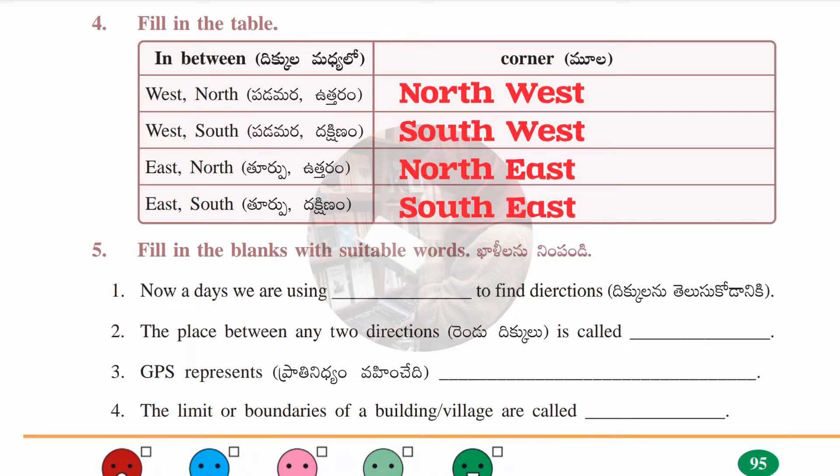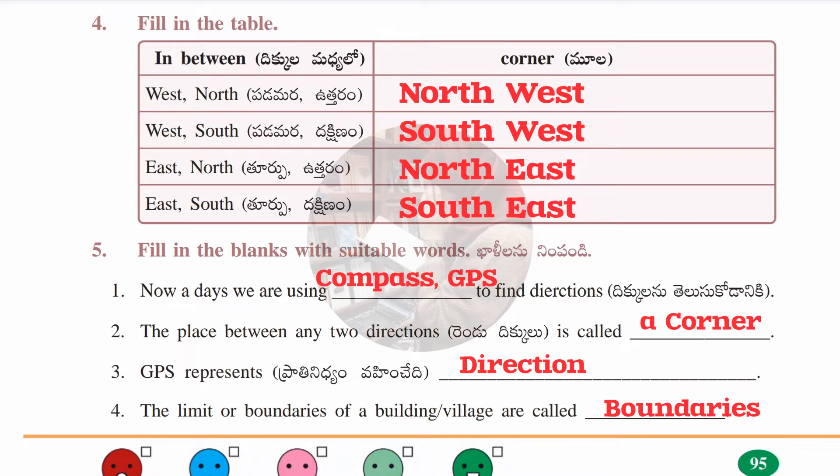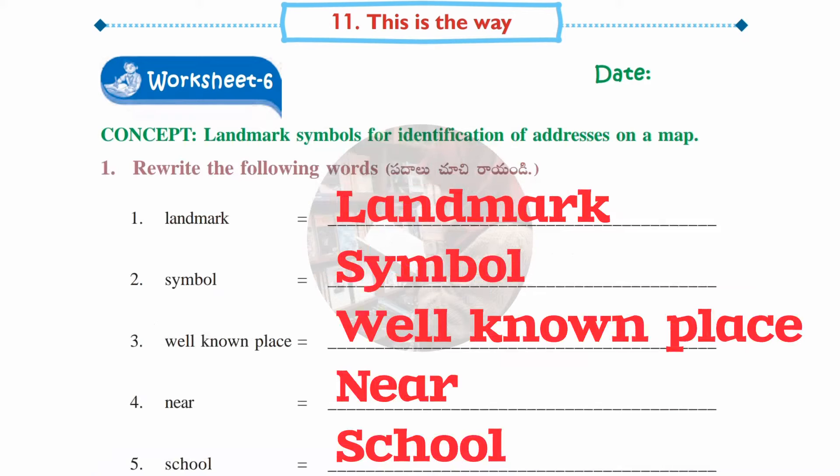Fifth section, fill in the blanks: Nowadays we use compass and GPS to find directions — GPS means Global Positioning System. The place between any two directions is called a corner. GPS represents directions. The limits or boundaries of a building or village are called boundaries.